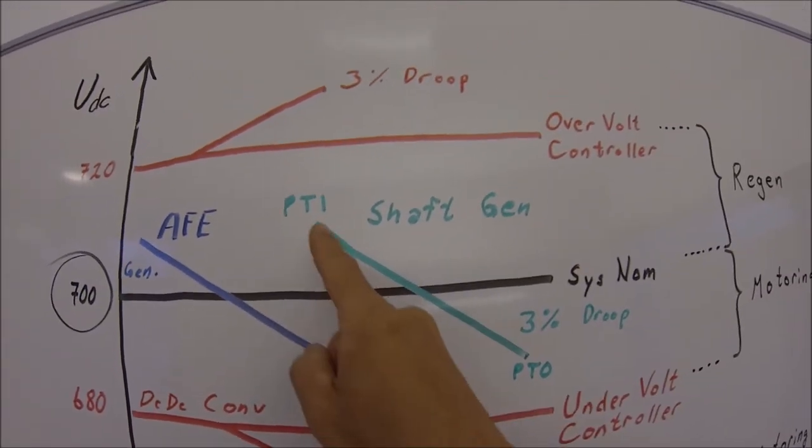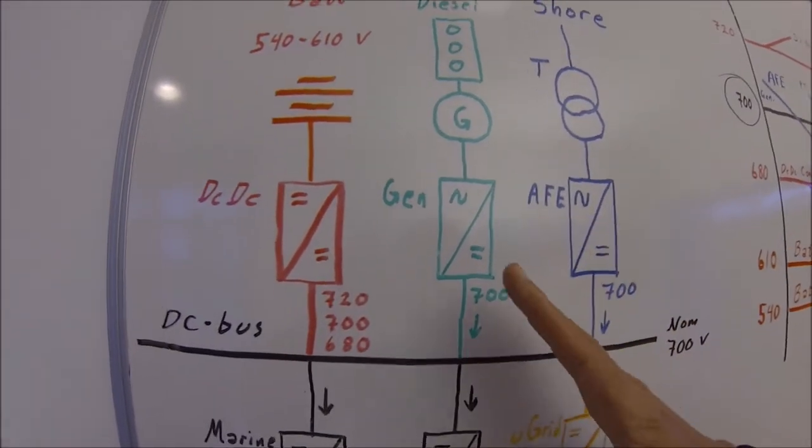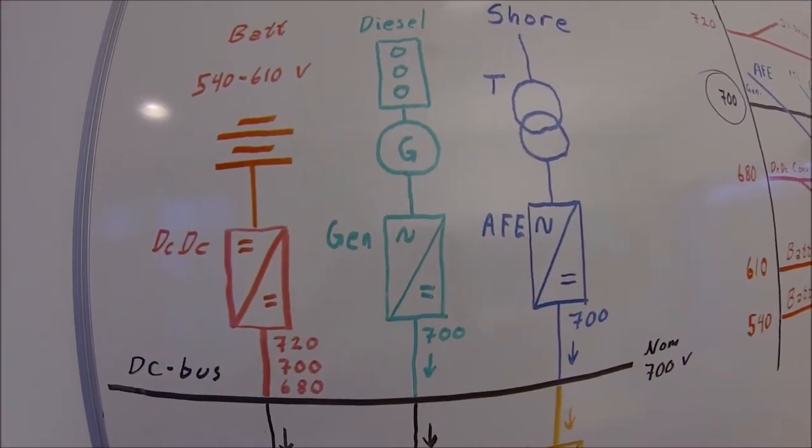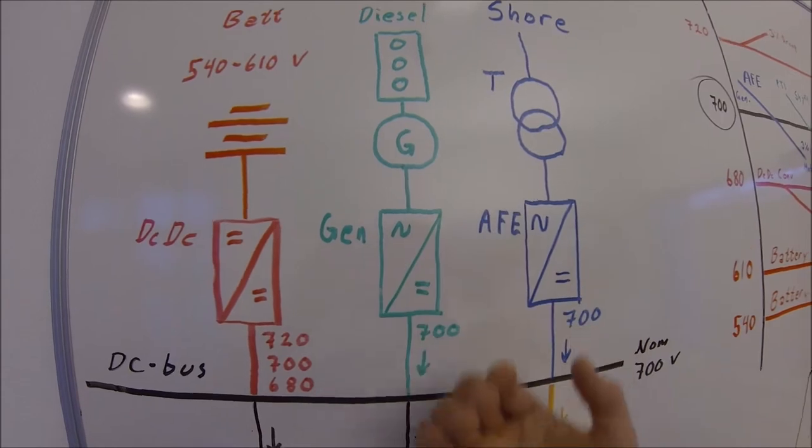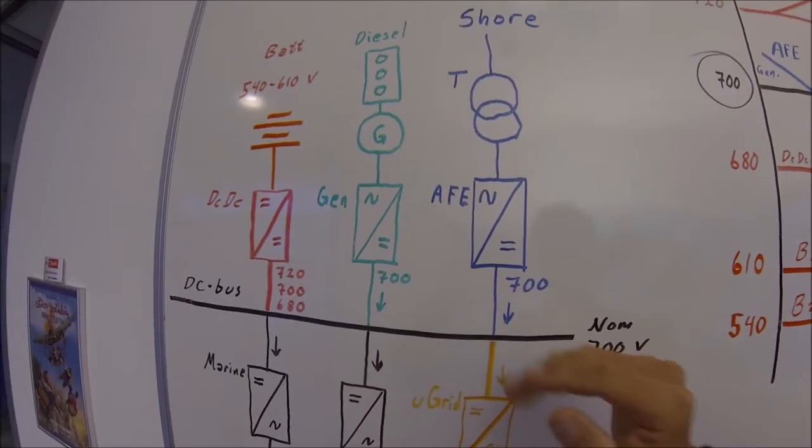Then you can do exactly the same on the shaft generator. The shaft generator will then act very similar to the active front end. And when we pull energy out of the system, the voltage will droop synchronized to the active front end.